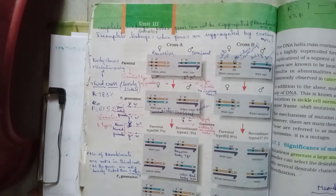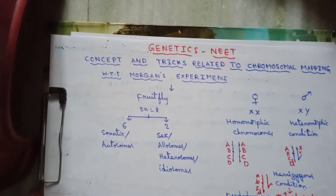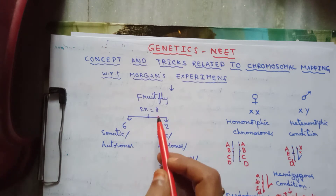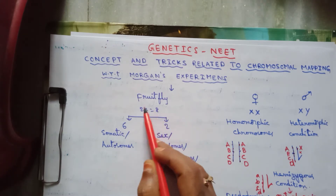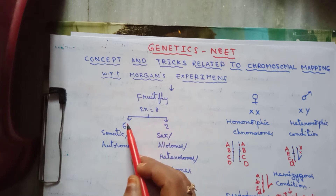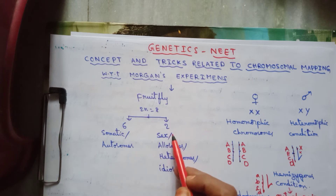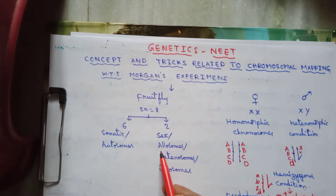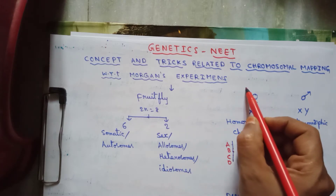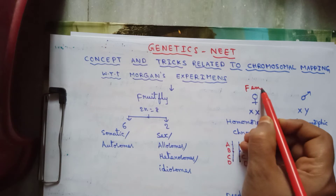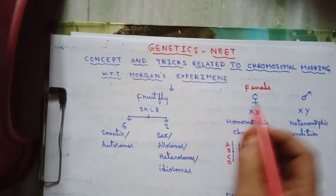In fruit fly, there are totally eight chromosomes - the diploid number of chromosomes. Among these eight chromosomes, six chromosomes are somatic chromosomes or autosomes, and two chromosomes are sex chromosomes, also called allosomes, heterosomes, or idiosomes.